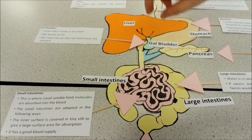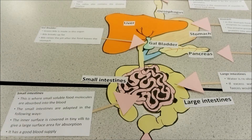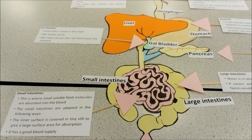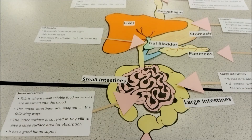The food then enters the small intestines, where all the nutrients are absorbed into the bloodstream. The small intestines are adapted for this in a few ways: they are very folded, increasing the surface area; the inner surface is covered in villi, which also increase the surface area; each villus is covered in microvilli; and each villus has a good blood supply, which helps maintain the concentration gradient, so the concentration of nutrients in the blood is always lower than in the food passing through.